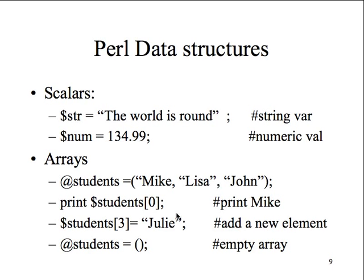Here are examples of Perl data structures. Dollar sign 'str' equals 'the world is round' - this is a string variable. Dollar sign 'number' equals 134.99 - a numeric value. Notice the dollar sign gives us a single variable. There's no initialization, no declaration - just here's a variable. This is very PHP-like. For arrays, the at symbol tells you there are multiple values - that's the array symbol.